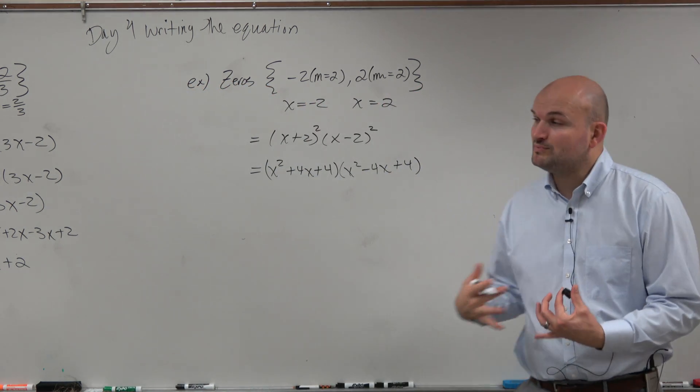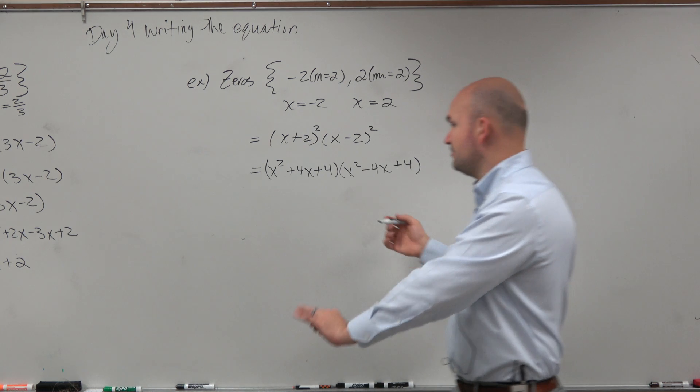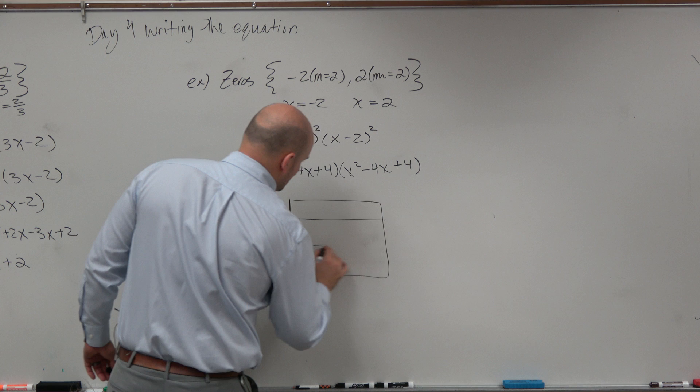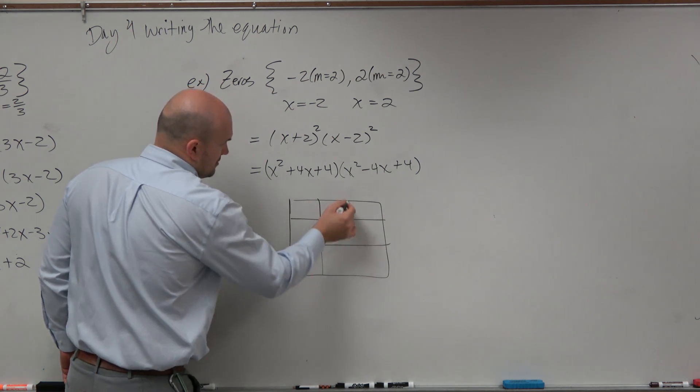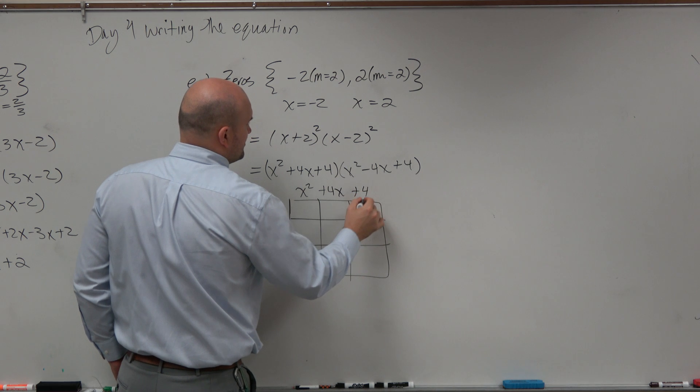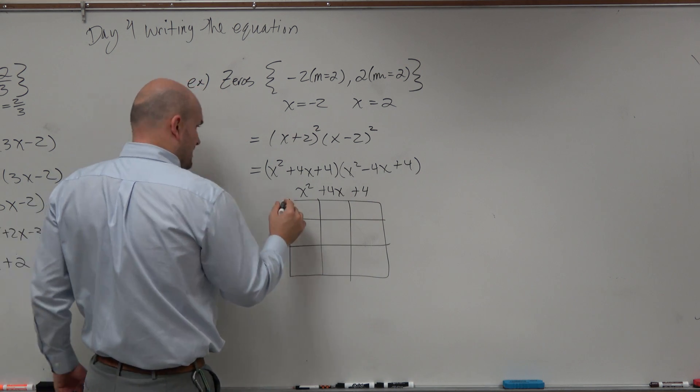Then again, if I want to multiply trinomials, you can apply the distributive property. But usually people make mistakes once we get up to trinomials. So I'll apply the box method in this case. I'll just write one up top. It doesn't matter which one you represent as the length or the width.